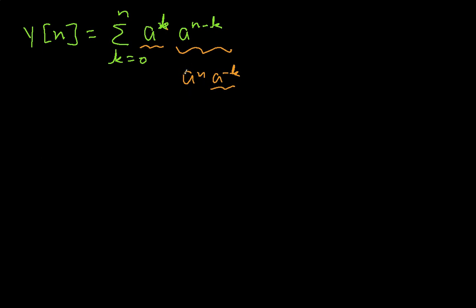Our a to the n is independent of k. So I can write this whole thing then as a to the n summation k is equal to 0 to n of 1. Again, the 1 comes from a to the k times a to the minus k.